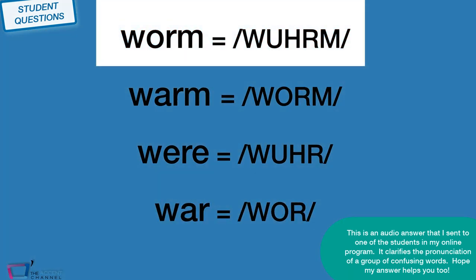W-O-R-M, worm. It's spelled with an O-R, but it's pronounced with an U-R. Sometimes I write this as a U-R, because that actually makes more sense. And that happens a lot in English. W-O-R, even though it's spelled, it looks like it should be war, right? It's W-O-R. It's pronounced were.